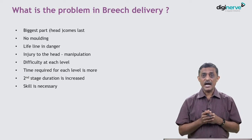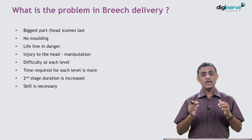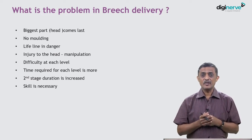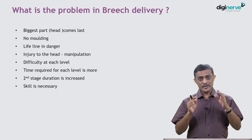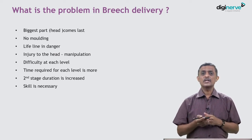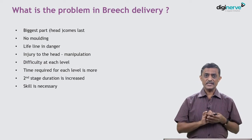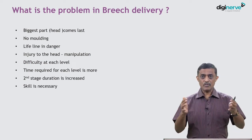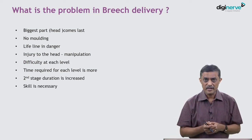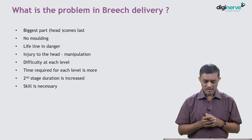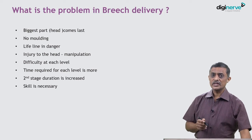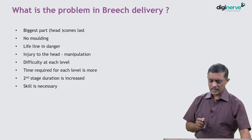We don't know whether the outcome will always be good or if there will be a problem delivering the hardest part — the head. Delay in delivery of the head can be detrimental to the life of the baby. In vertex presentation the head can mold and come out even if the passage is small, but in breech there is no time for molding. Prolonged second stage can cause severe asphyxia.